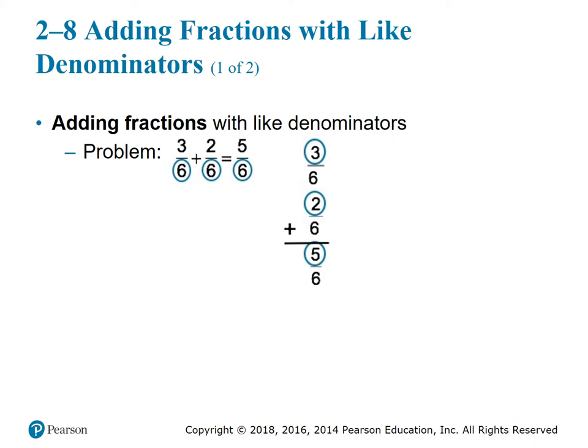Now let's talk about adding fractions with like denominators. The steps are straightforward: line up the fractions vertically or horizontally, then only add the numerators — do not add the denominators. In the problem 3/6 plus 2/6, add 3 plus 2 to get 5, then place that over the denominator 6, giving us 5/6. Can we reduce that? No — so we're good.